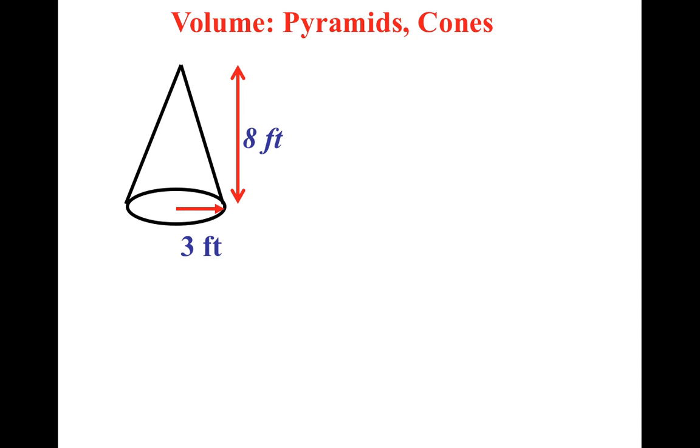So, here we are. Step one, write formula. One-third pi r squared times the height. Step two, plug in numbers. Step three, start solving.